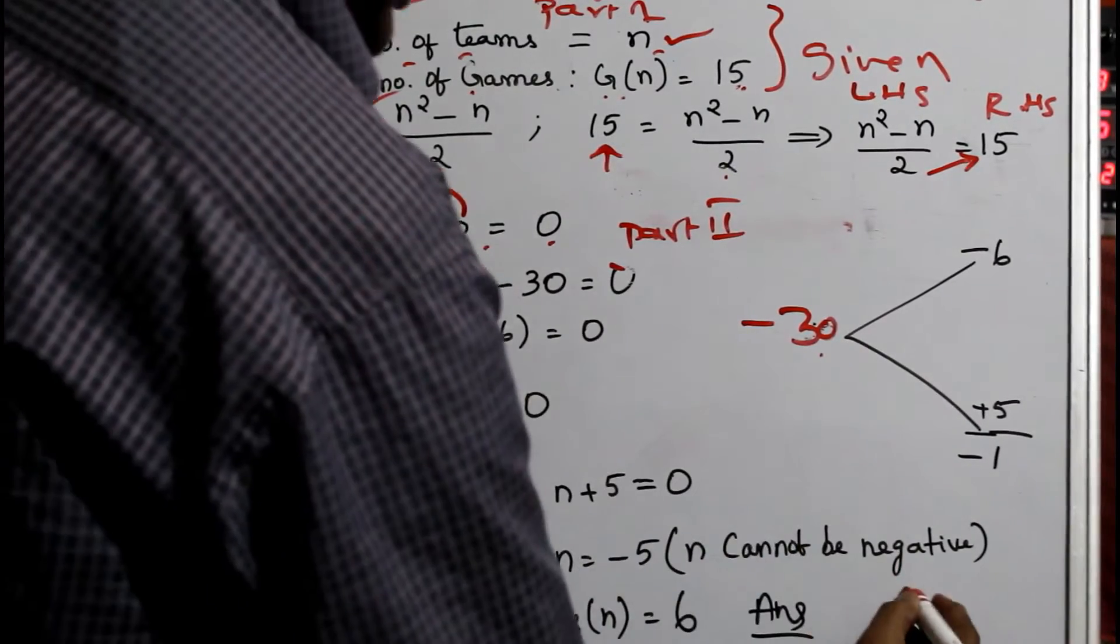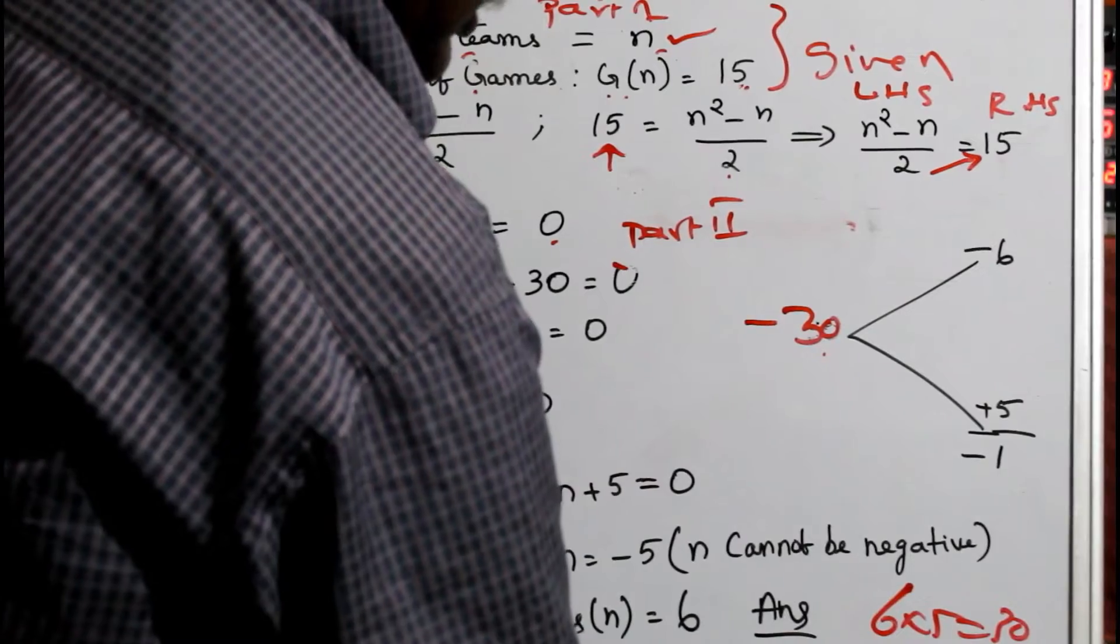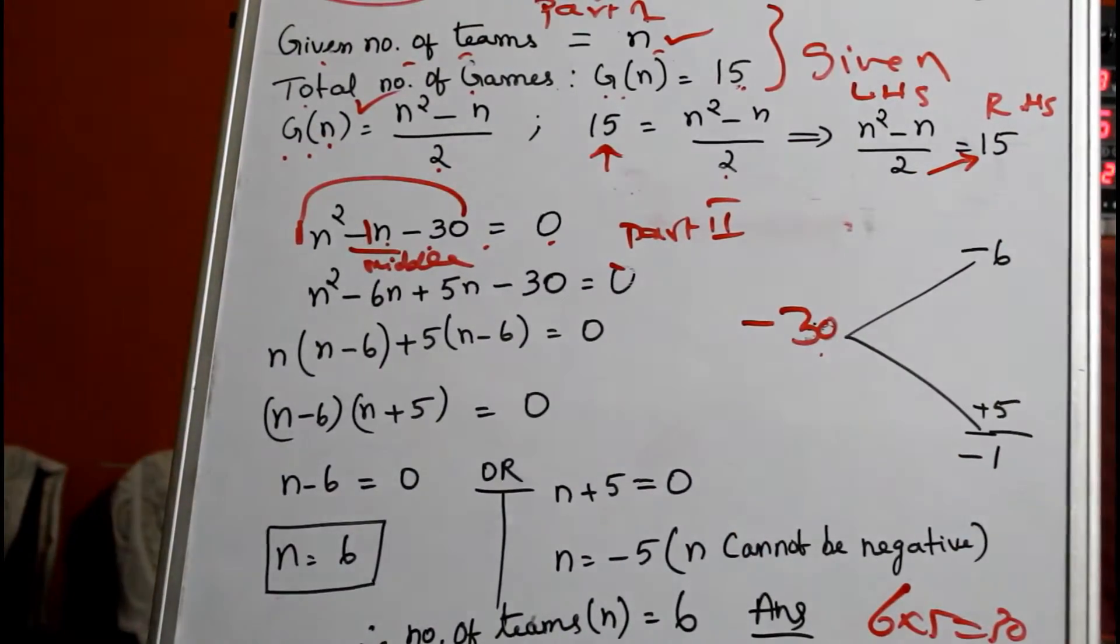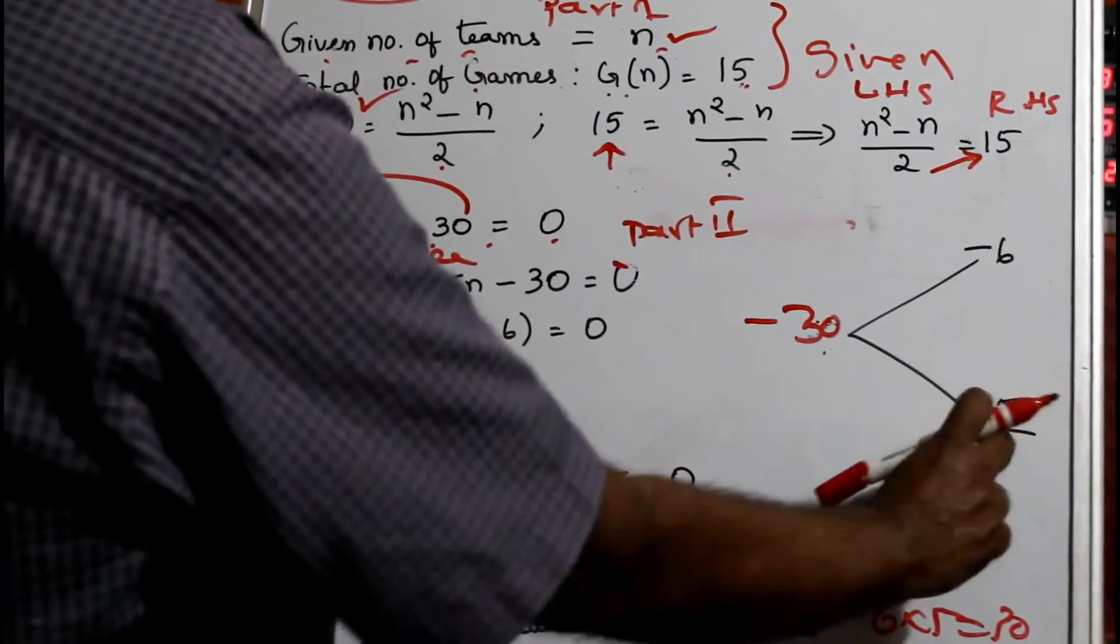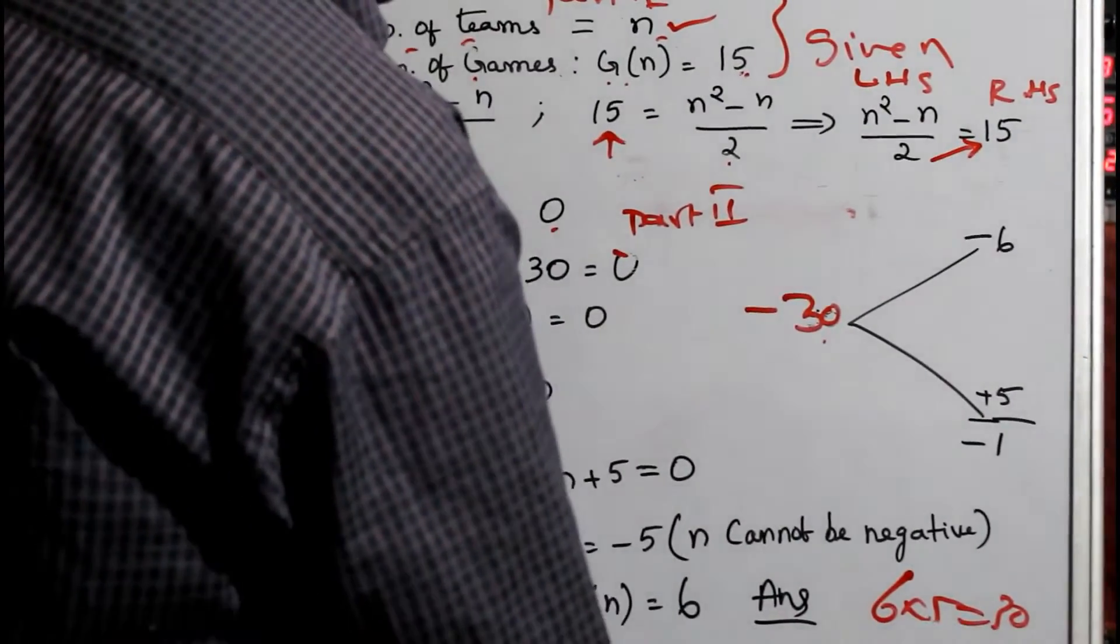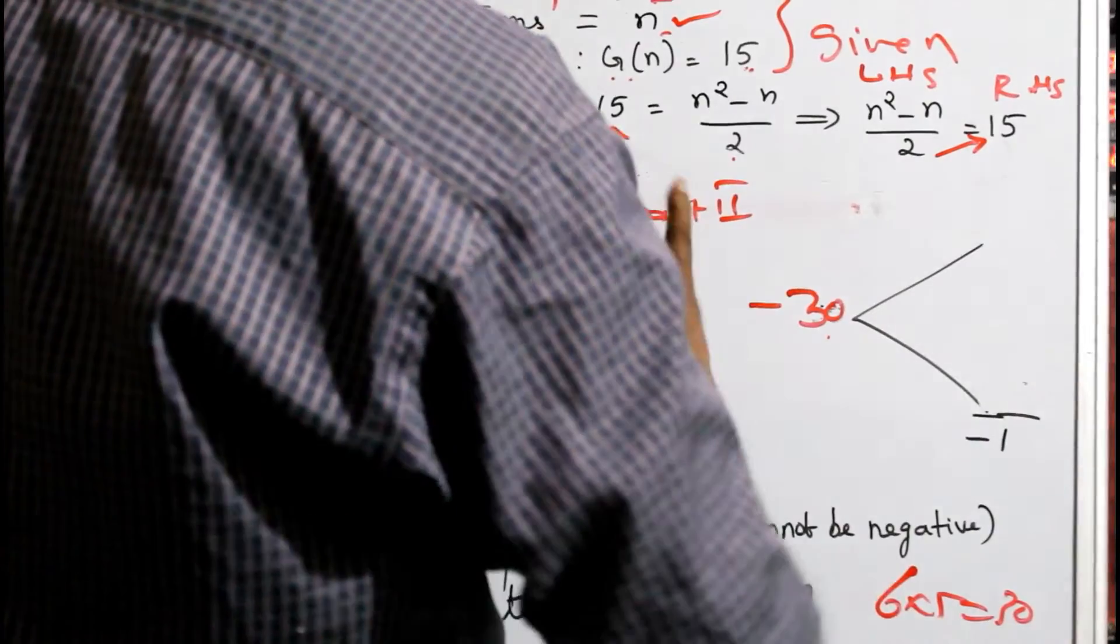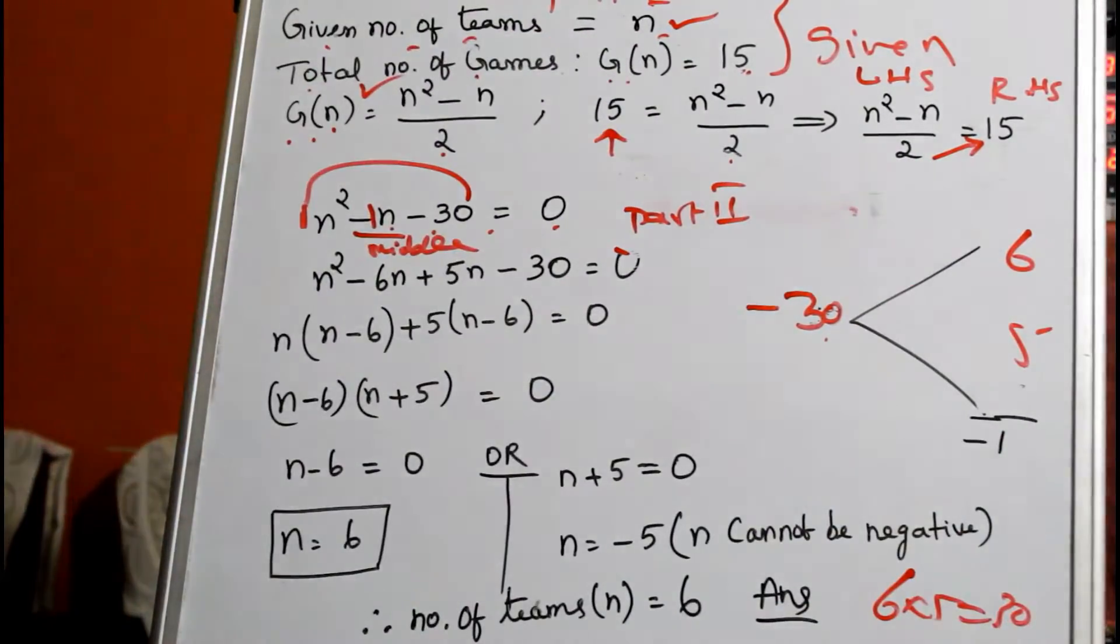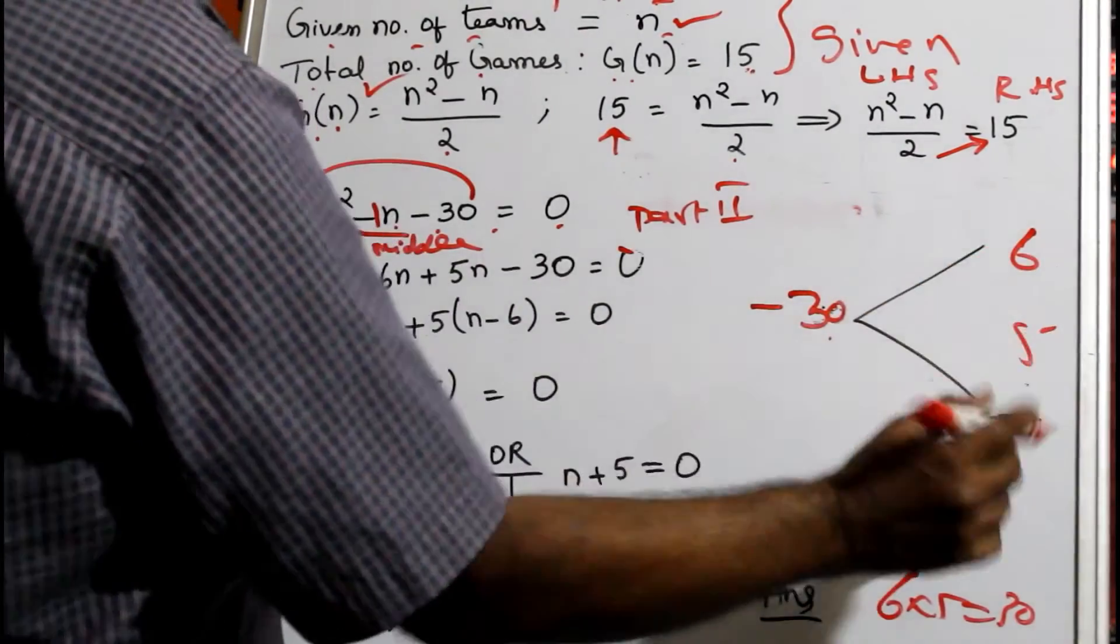Don't take any signs, just find the factors of 30. 10 × 3 is not working, so next you can take 6 × 5. 6 × 5 = 30, 6 + 5 = 11, 6 - 5 = 1. You're getting this one.